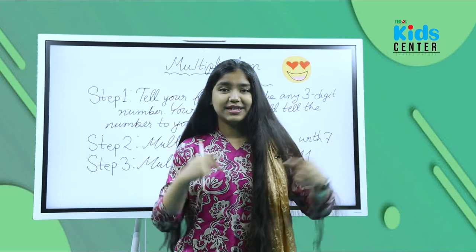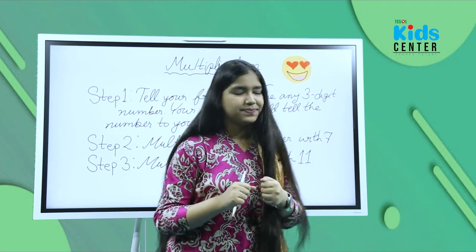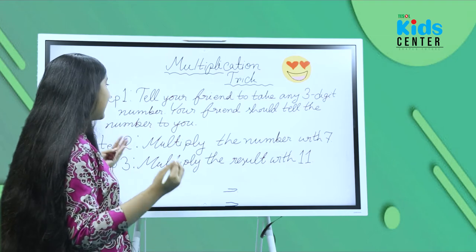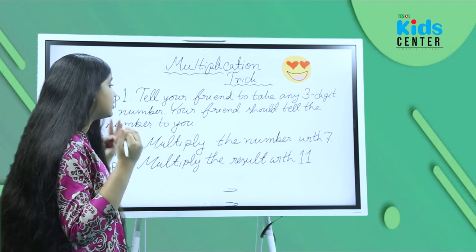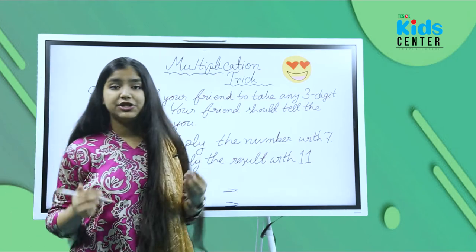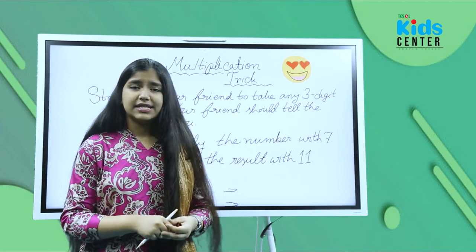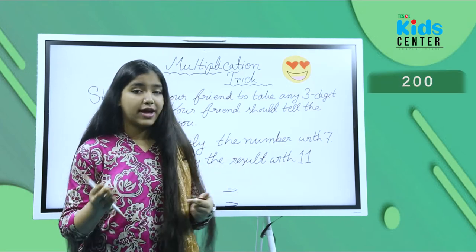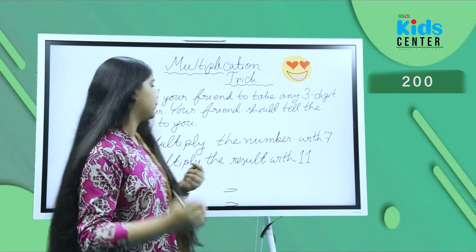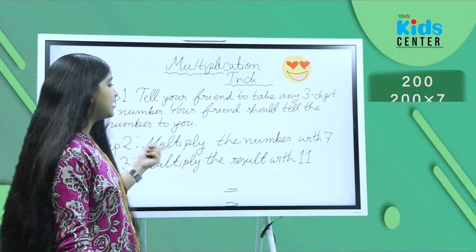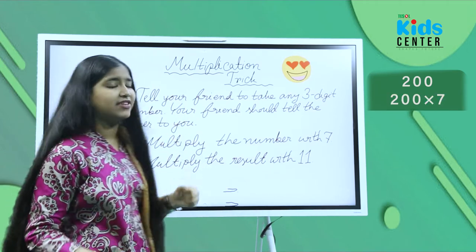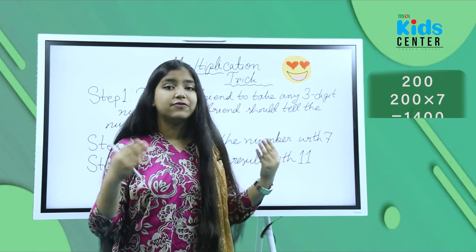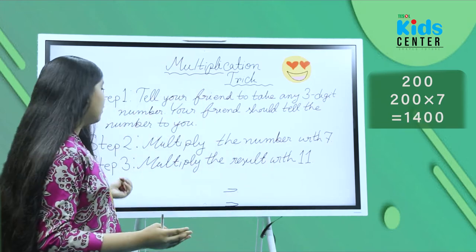Step one: tell your friend to take any three-digit number, and your friend should tell that number to you. Suppose your friend chose 200 — they tell you 200. Step two: multiply the number by seven. So if we multiply 200 by seven, we get 1400.